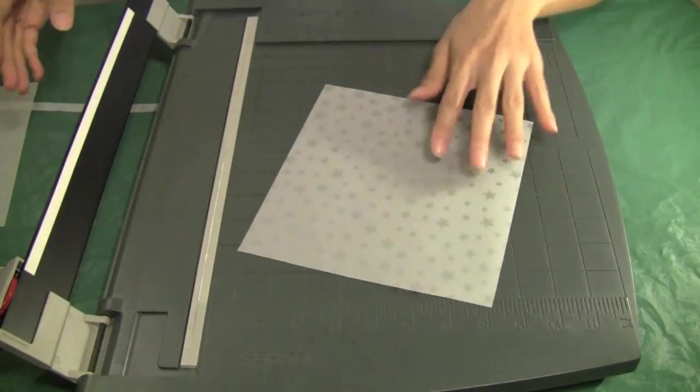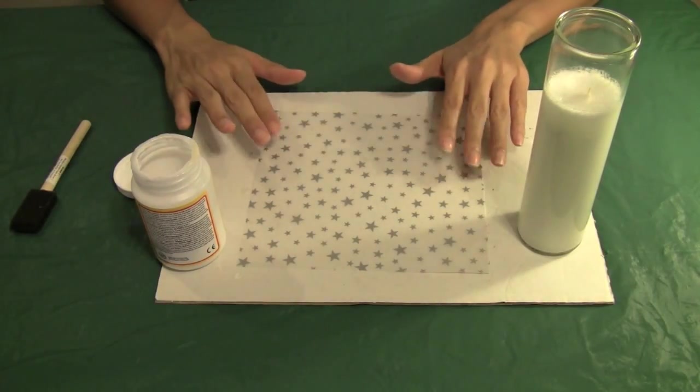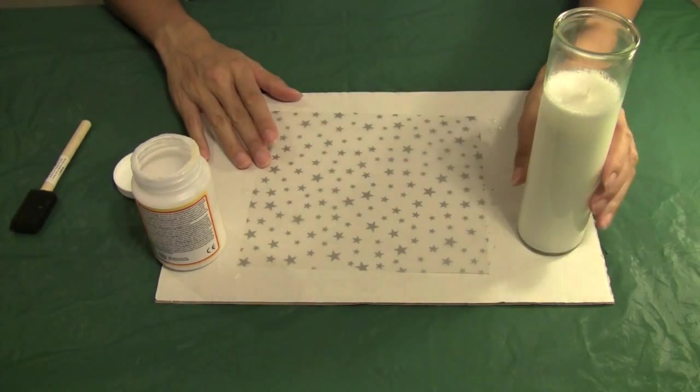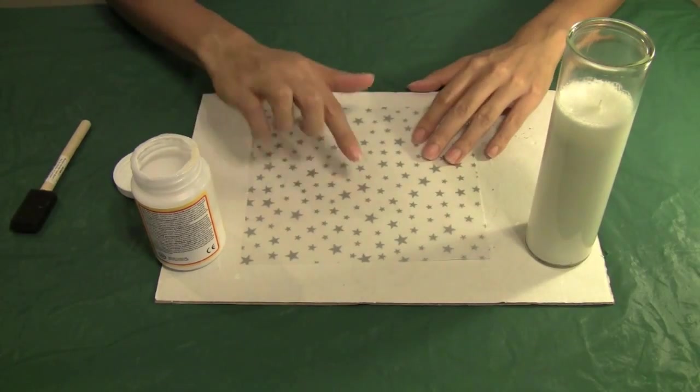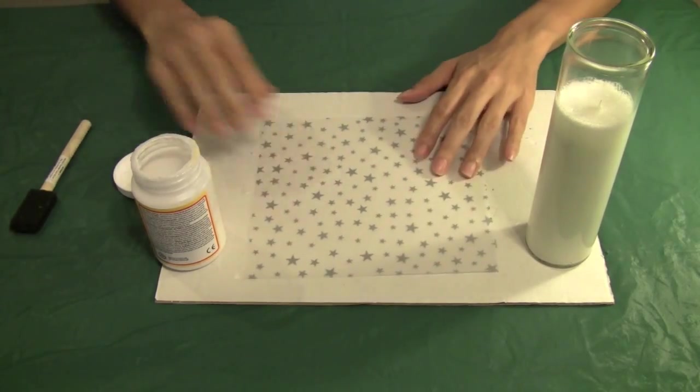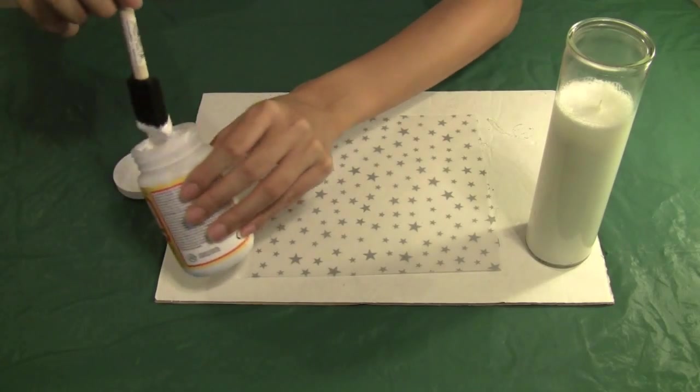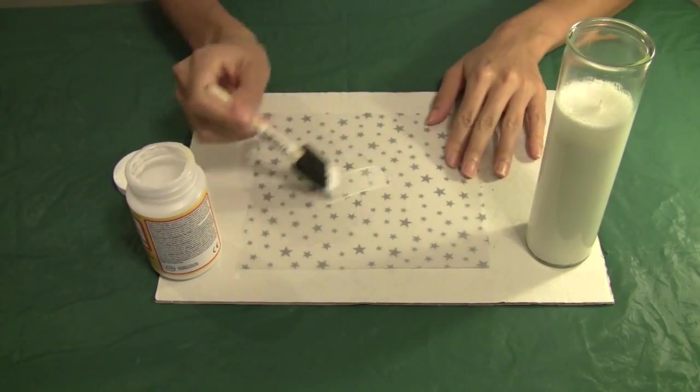And this is the vellum paper we'll use in our next step. Here comes the fun part. We're now going to add Mod Podge to our vellum paper and to our candle. This is the front side of my vellum paper. I'm going to turn it over and start using my Mod Podge to the back of the paper.